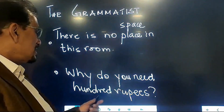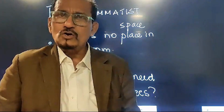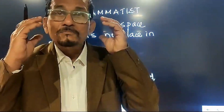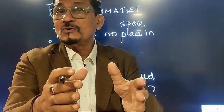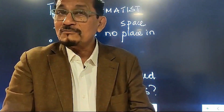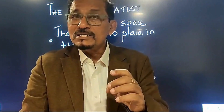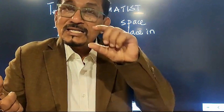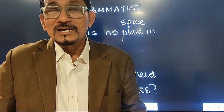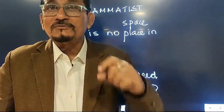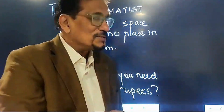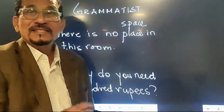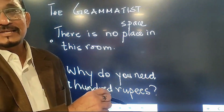Now let's look at this sentence: 'Why do you need 100 rupees?' This seems correct, but these are the bloopers I really love to avoid. 100 rupees is not just one — it's a sum, a collective amount of 100 rupees. So the correction for this would be 'Why do you need 100 rupees?' with the verb treated as singular. That is the correction of the sentence.